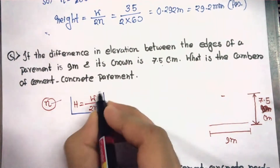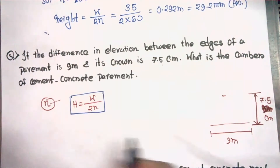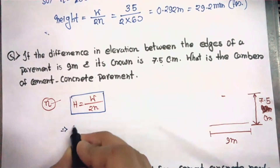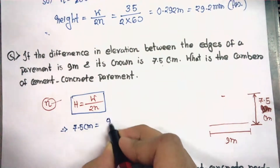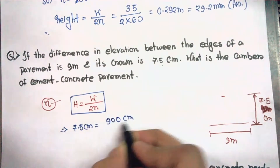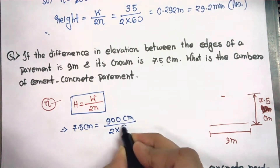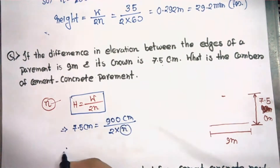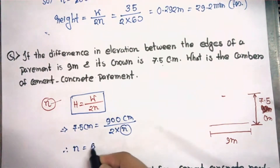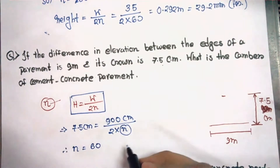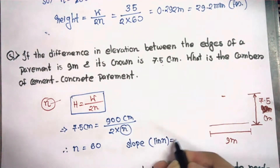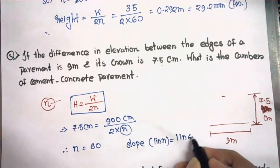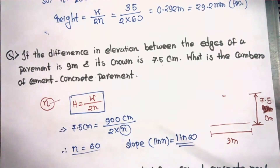h = w / 2n. Here h = 7.5 cm, and the width is 9 meters, which we can write as 900 centimeters. We have to find the value of n, so we can easily find n = 60. Therefore, the slope is 1 in n, which equals 1 in 60, or n = 60.